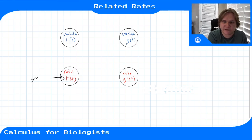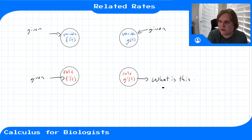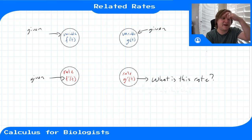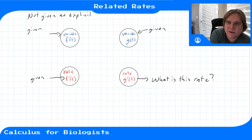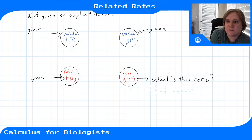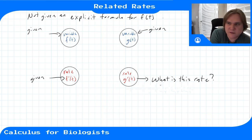Usually the rate f prime of t will be given, the value of f will be given, and the value of g will be given, and you're trying to find the rate g prime of t. These are interesting problems because you're typically not given an explicit formula for g or f as a function of time.